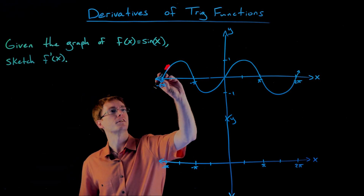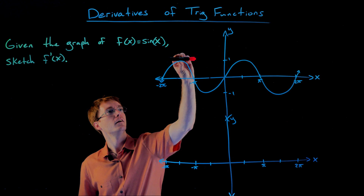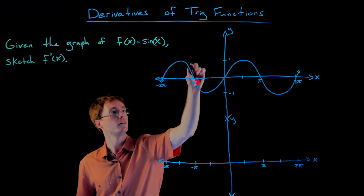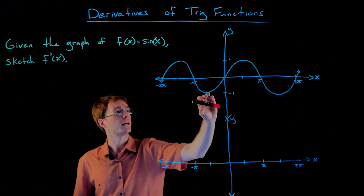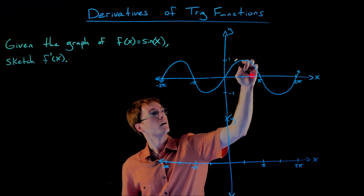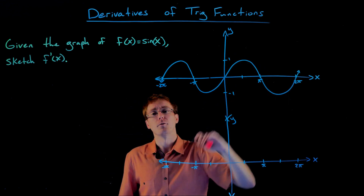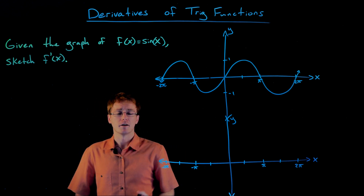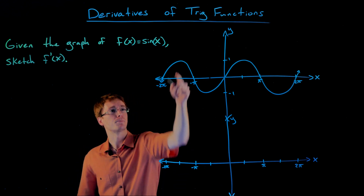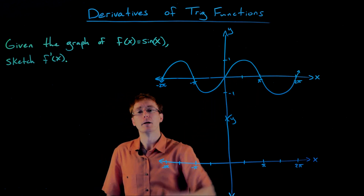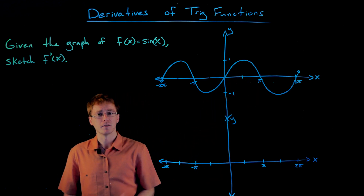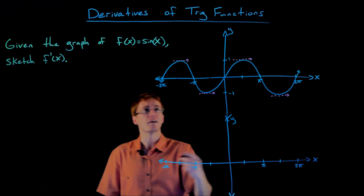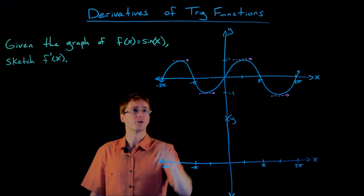If we look across the graph of our sine function, where is it going to have a horizontal tangent line? Looks like we have one here, as well as one down here, up here, and another one right there. All of our horizontal tangent lines correspond to the maximum and minimum values of our sine function. All these little pink lines are tangent lines and they all have a slope of zero.